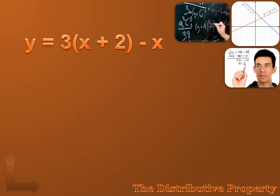Let's look at another example of the distributive property in algebra. In this expression, y equals three times the expression x plus two, minus x. We've got to multiply that three times both the x and the plus two. And when we do, we get y equals three x plus six minus x. We can simplify that expression, but in order to simplify it correctly, we need to understand a couple of things.